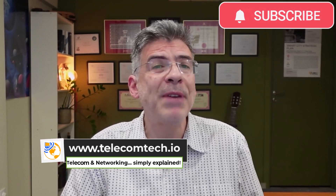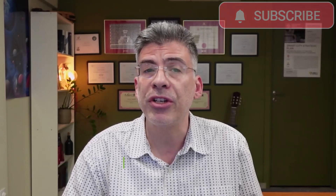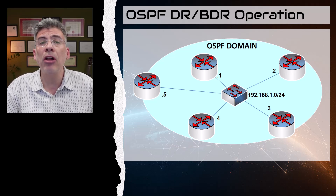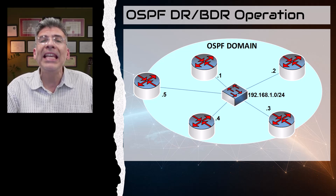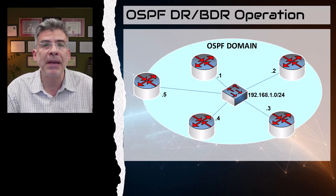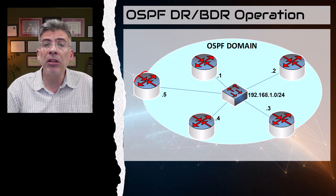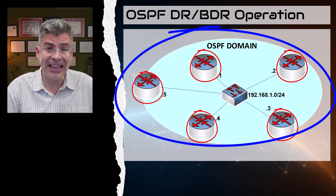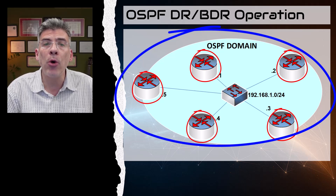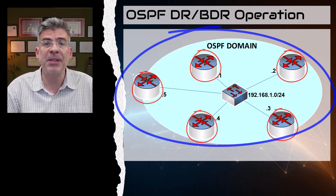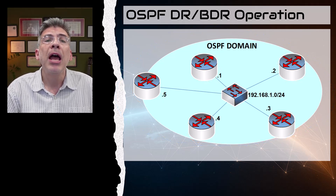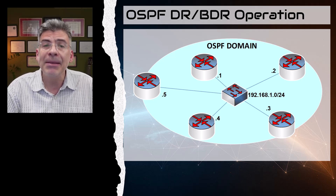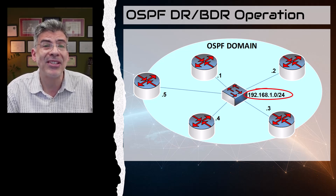Now let's get back to the OSPF DR-BDR operation. When we deploy OSPF using a multi-access technology such as Ethernet, we need a mechanism to help streamline OSPF operation. If you have multiple OSPF routers on a single network segment or broadcast domain like this one, you will have to establish many OSPF adjacencies. Specifically, each OSPF router must become adjacent with every other OSPF router in the network segment, simply because all of these routers are in the same subnet.